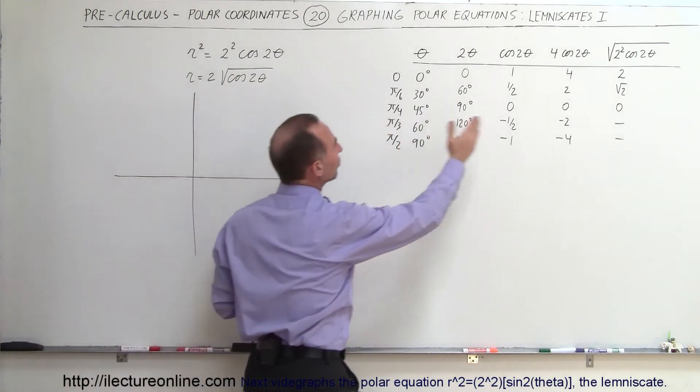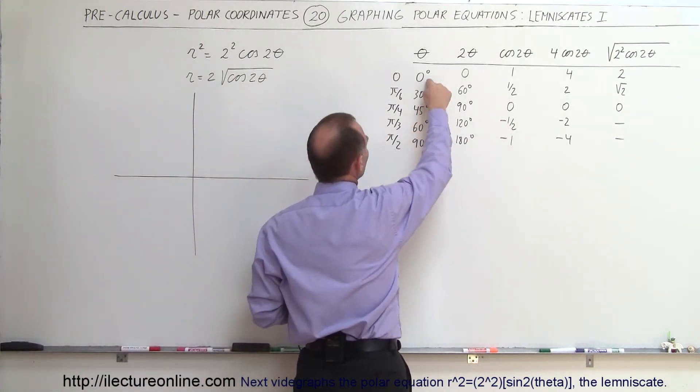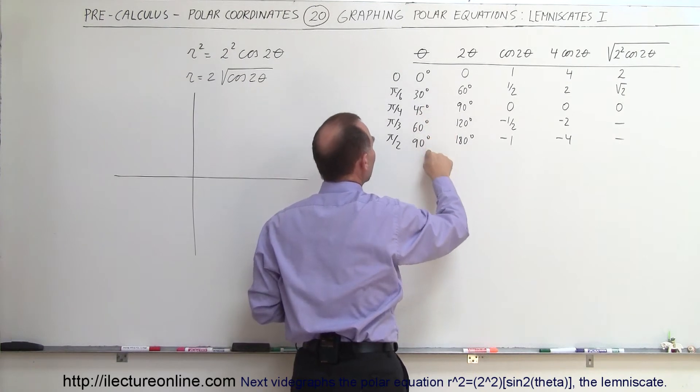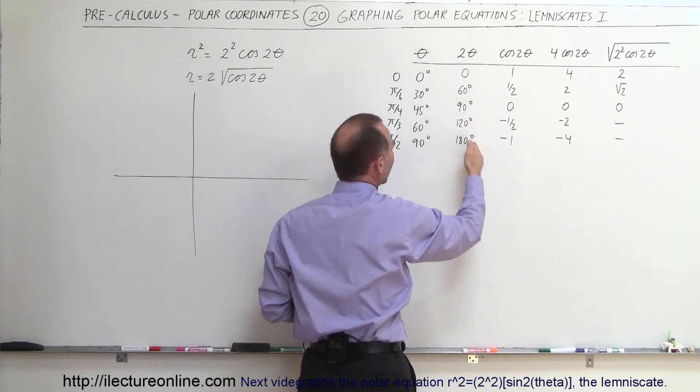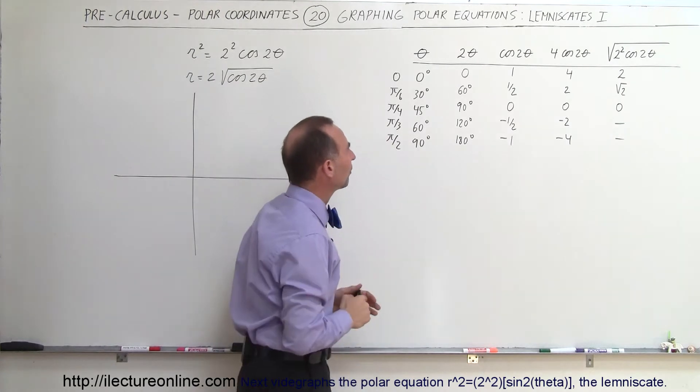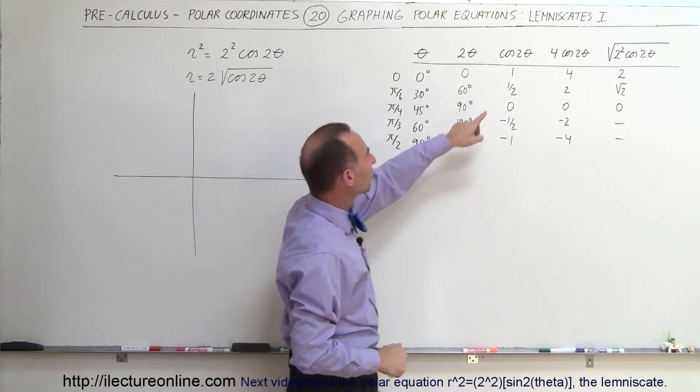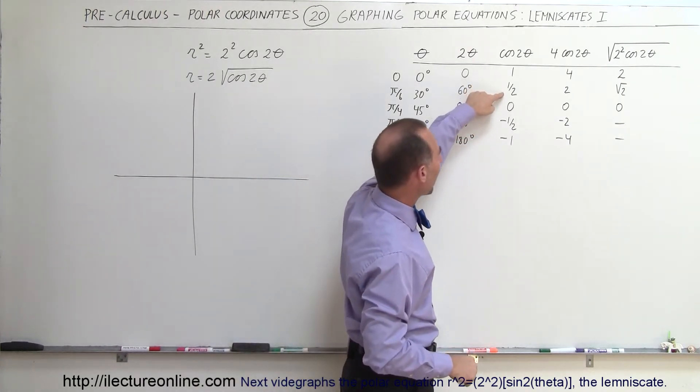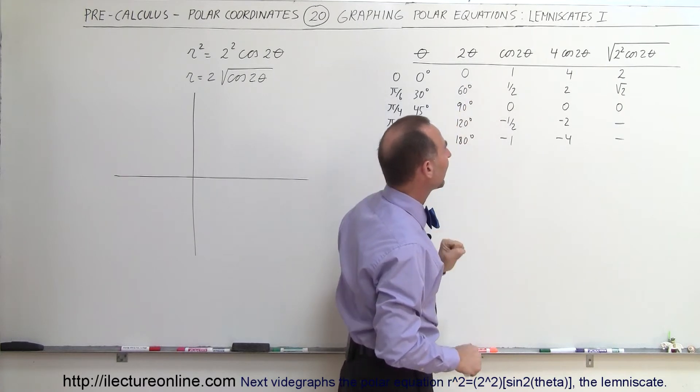So when we draw the table of values right here, notice for the angle of 0 degrees, 30, 45, 60 and 90, if we double the angle we get these angles right here, notice the radian equivalent of those. When we then evaluate the cosine of 2 theta we get 1, 1 half, 0, negative 1 half and negative 1.